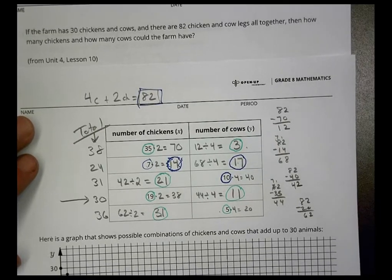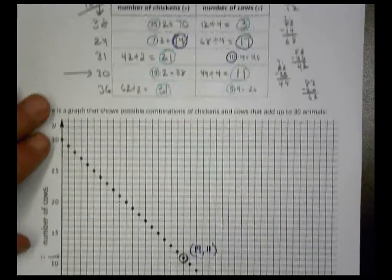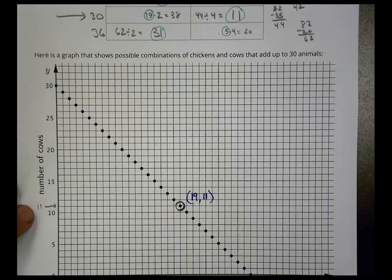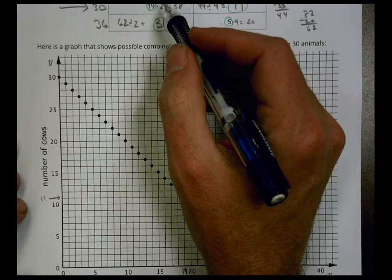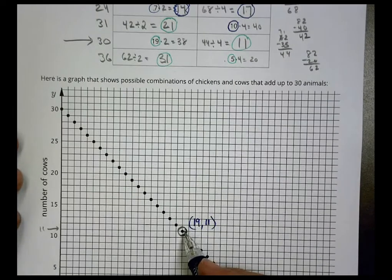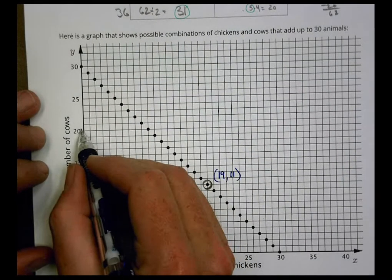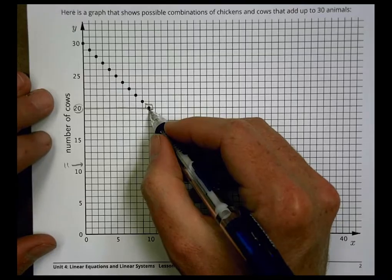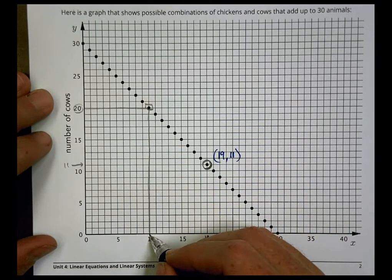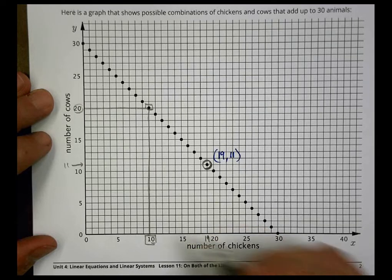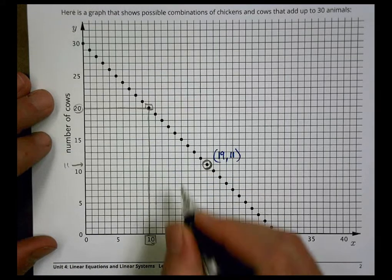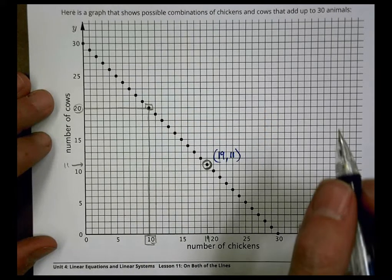The question asks: if the farm has 30 chickens and cows altogether, how many chickens and how many cows could there be? Based on our table, the answer is 19 chickens and 11 cows. You can also use the graph — for example, if I try 20 cows, tracing the line gives about 10 chickens, which is also 30 animals total.